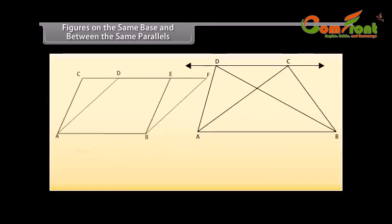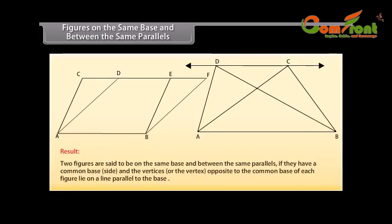So, we can say that two figures are said to be on the same base and between the same parallels if they have a common base side and the vertices or the vertex opposite to the common base of each figure lie on a line parallel to the base.